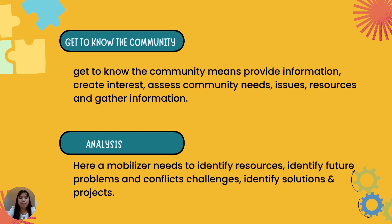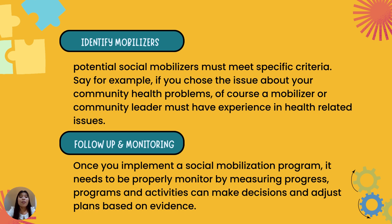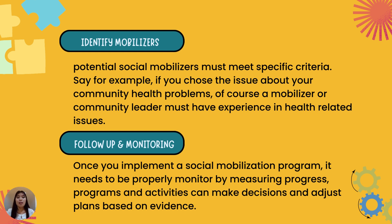Those are examples of doing a brainstorming analysis using the SWOT analysis template. Next is identifying mobilizers. When identifying mobilizers or community leaders, a potential social mobilizer must meet specific criteria. For example, if you choose the issue of community health problems, a mobilizer or community leader must have experience in health-related issues.